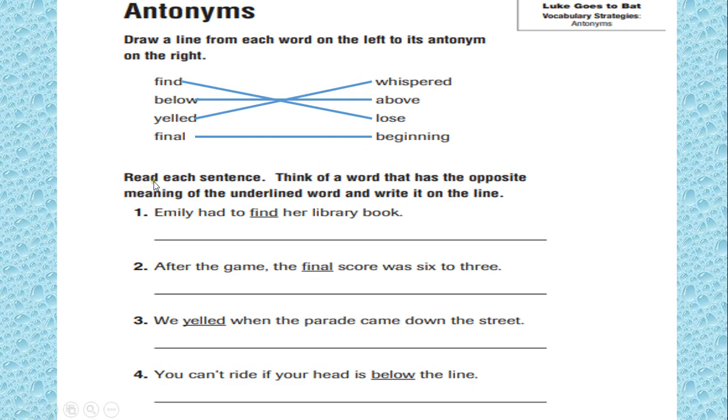Now we need to read each sentence. Think of a word that has the opposite meaning of the underlined word and write it on the line. Just a quick reminder to be able to do these sentences. The antonym of find is lose. The antonym of below is above. The antonym of yelled is whispered. The antonym of final is beginning.